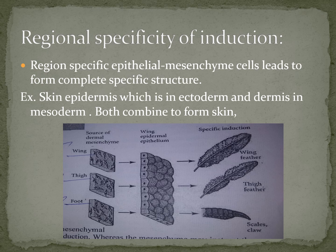Next is regional specificity of induction. In regional specificity, only a specific region can induce and make a particular structure, organ, or body part. Region-specific epithelial-mesenchymal cell interactions lead to the formation of a complete specific structure. For example, skin epidermis, which is in the ectoderm, and dermis, which is in the mesoderm, combine to form the skin.